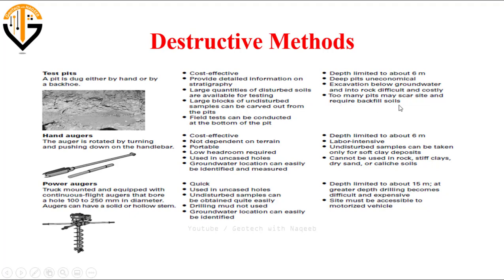Too many pits may scar the site and require backfilled soils. For hand augers, advantages include: cost effective, not dependent on terrain, portable, low headroom required, used in uncased holes, and groundwater location can easily be identified. Disadvantages: depth is limited to about 6 meters, labor intensive, undisturbed samples can only be taken for soft clay deposits, and they cannot be used in rocks, stiff clay, dry sand, or poor rocks.